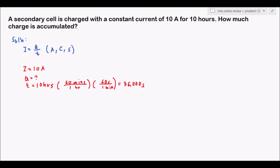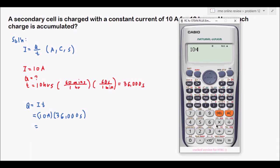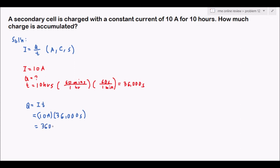Now we solve for Q. Going back to the formula I equals Q over T, rearranging gives Q equals I times T. Substituting: 10 amperes times 36,000 seconds equals 360,000 coulombs. That is our answer.